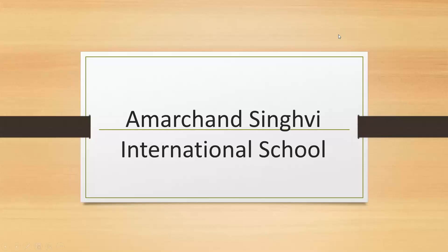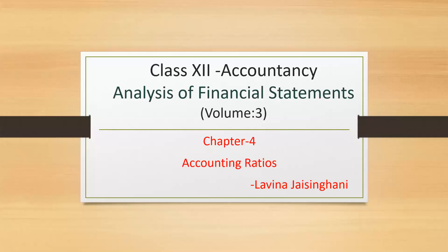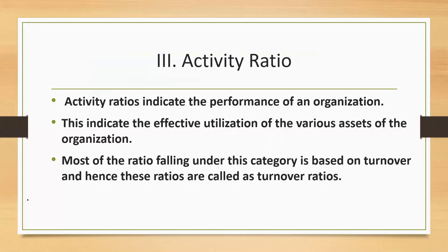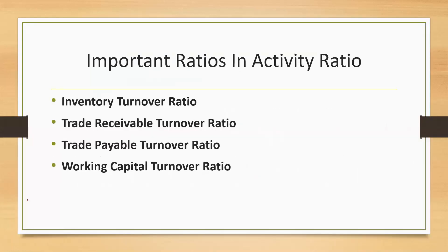Hello students, welcome back to our accountancy class. We were on chapter number 4, that is accounting ratios, and we were doing activity ratios. We have already covered the first type of ratio, that is inventory turnover ratio. I hope that is clear to you.